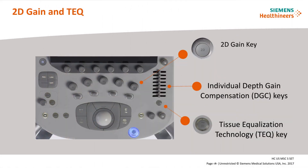2D overall gain is controlled by the hard key on the control panel. Individual Depth Gain Compensation keys for the 2D image are located on the right side of the control panel. Tissue Equalization Technology key will optimize both the 2D and contrast image when selected.